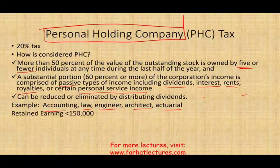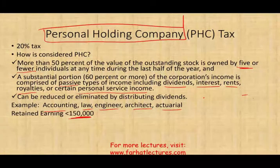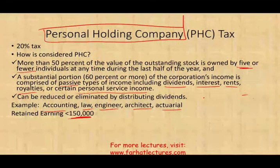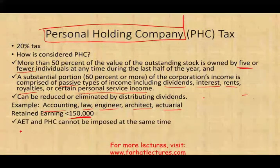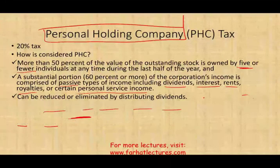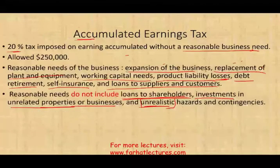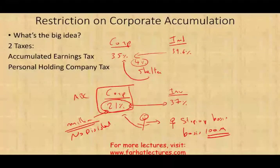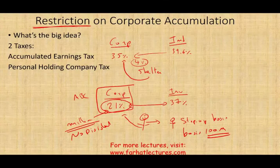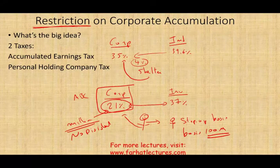For a personal holding company, you can only retain $150,000 — that's the allowed amount. Bear in mind, the IRS cannot impose both the accumulated earning tax and the personal holding company tax at the same time. It's either one or the other. Both taxes deal with the same restriction: you cannot have too much retained earnings because you're not paying out dividends, and the government wants their money.